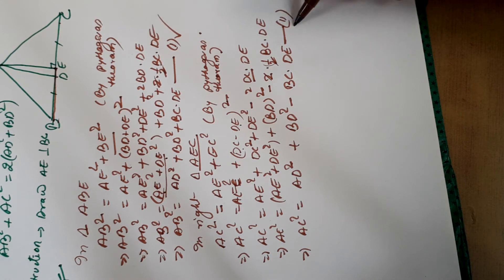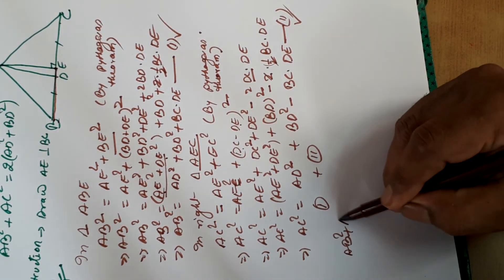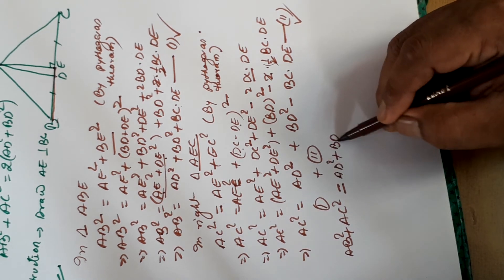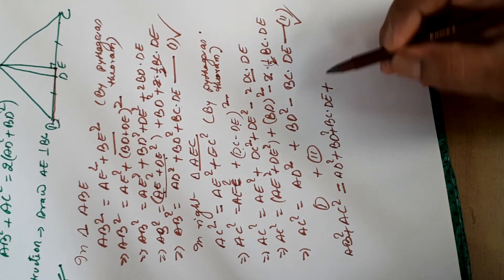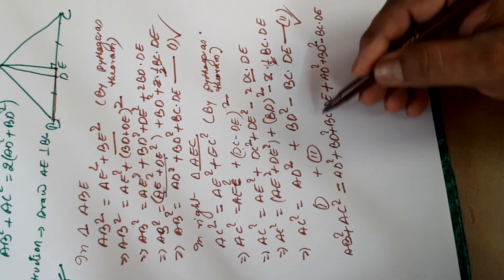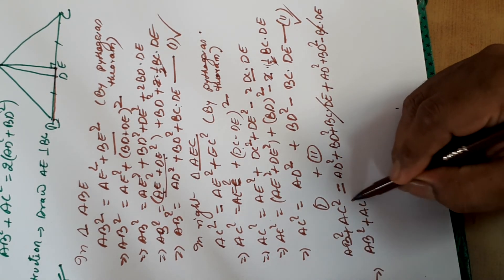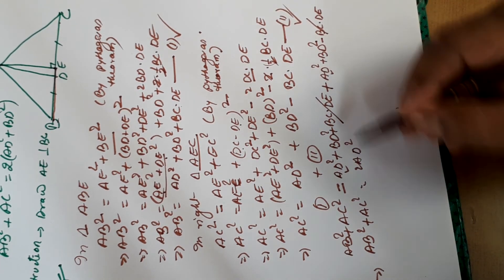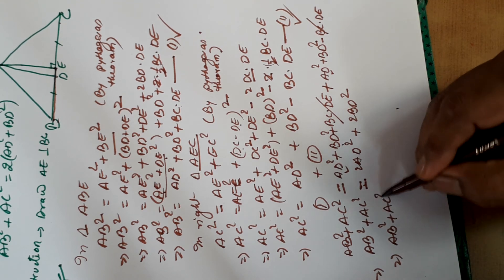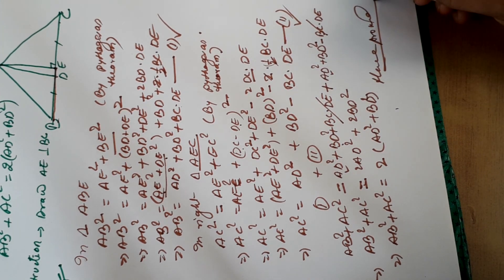Now we will add equation 1 and equation 2. In the LHS we have AB square plus AC square. On the RHS: AD square plus BD square plus BC into DE, plus AD square plus BD square minus BC into DE. The plus BC into DE and minus BC into DE cancel out. We are left with AB square plus AC square equals 2 AD square plus 2 BD square. Thus AB square plus AC square is equal to 2 AD square plus 2 BD square. Hence proved.